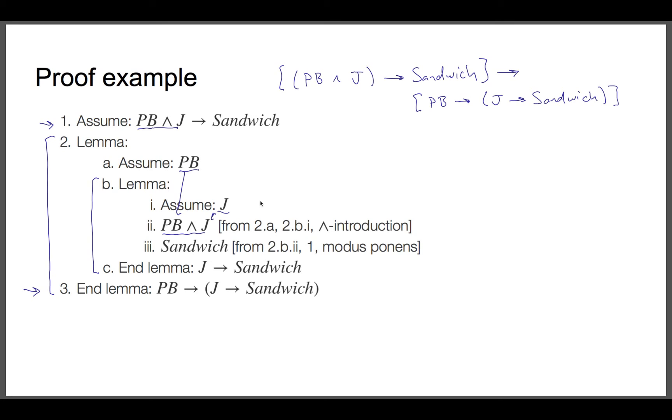The only assumptions we made within the lemma are J, and the conclusion of the lemma is this one. So we get jelly implies sandwich. Now let's take a look at the outer lemma, this one right here.